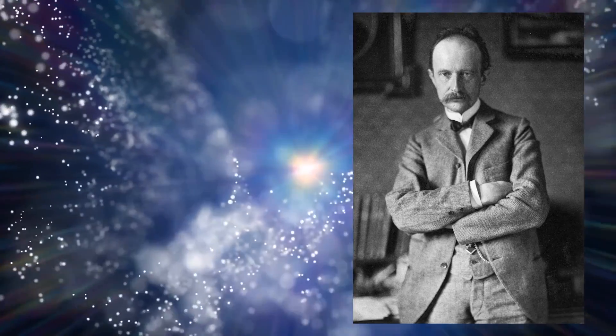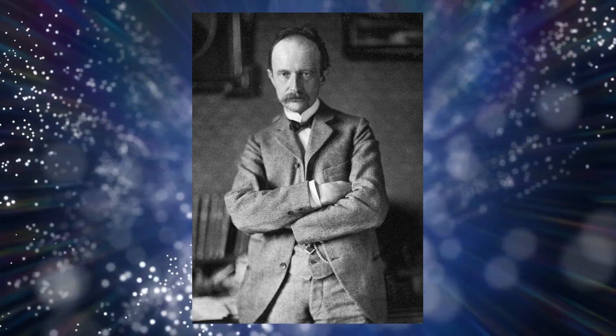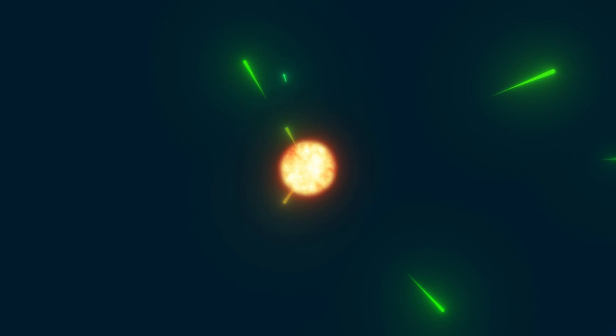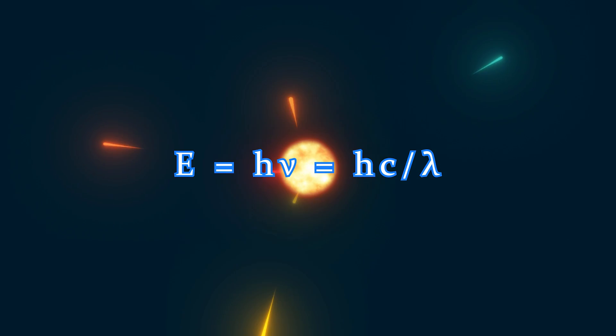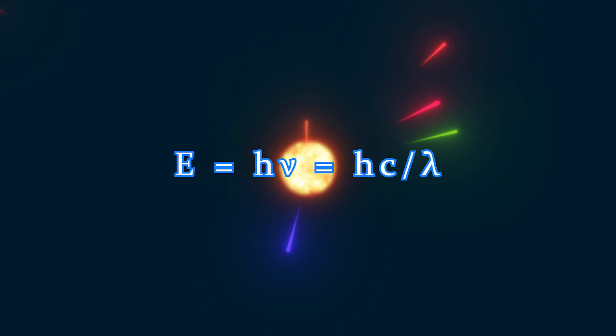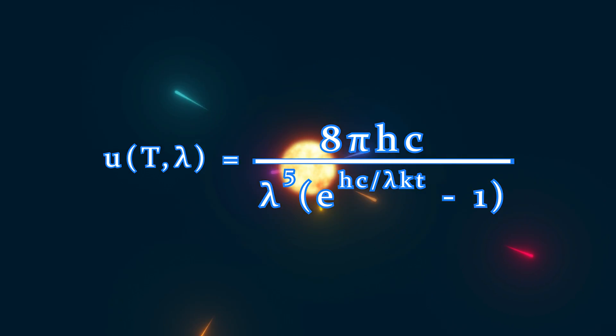Only in 1900 did Max Planck, one of the founders of quantum physics, manage to solve this puzzle. He hypothesized that light is emitted not as a continuous stream, but in discrete packets, where the energy of each packet is directly proportional to the frequency and inversely proportional to the wavelength. Based on this assumption, Planck derived his own law of radiation, which turned out to be precisely in line with observed phenomena.